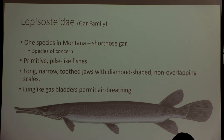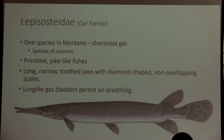Gars are also air-breathing when they need to be, allowing them to survive in low-oxygen conditions. If you see a log floating at the surface, it could be a gar — they often float like that, which makes them very vulnerable to human predation, especially bow and spear hunting. This is especially problematic because like sturgeon they have late sexual maturation and a really long lifespan. Giant alligator gars, native to the eastern US, can grow to about 10 feet.